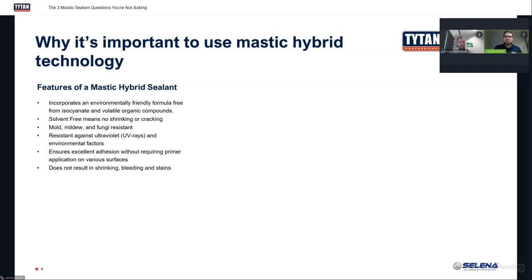You don't have to worry about shrinking, bleeding, or staining. With 100% silicone you can get bleeding and staining, but since this is a hybrid with polyurethane, that's prevented. It can also be applied underwater — so if you have a pipe that's leaking and need a quick fix, you can use this mastic hybrid technology to seal up areas that are already submerged or have water around them.